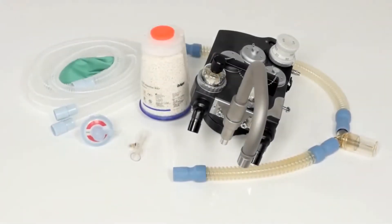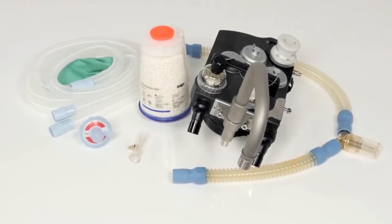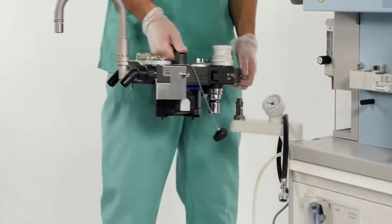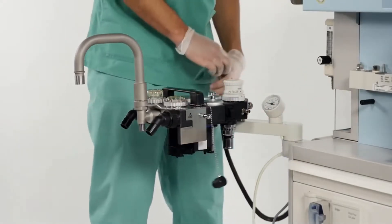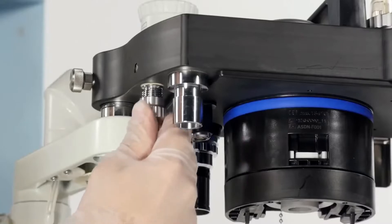For preparation of the breathing system, make sure that all parts are present. Fit the compact breathing system onto the mount located on the mounting arm. Connect the fresh gas hose from the Fabius to the compact breathing system.